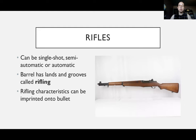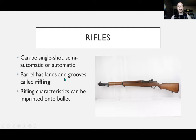Rifles can be single shot, semi-automatic, or automatic. Single shot means you can only chamber and fire one round at a time and must manually reload after each shot. The important thing about rifles is that they contain lands and grooves inside their barrel, which we call rifling. Pistols and revolvers can also have rifling, and these rifling characteristics are imprinted onto a bullet, allowing us to compare ammunition components collected from a crime scene to test-fired bullets and tie them back to a specific gun.